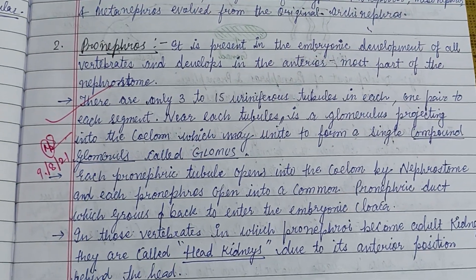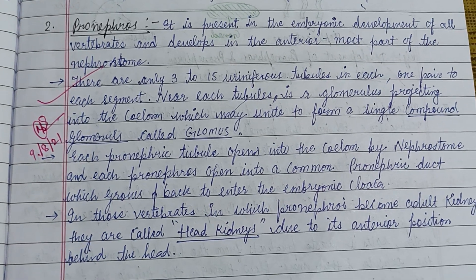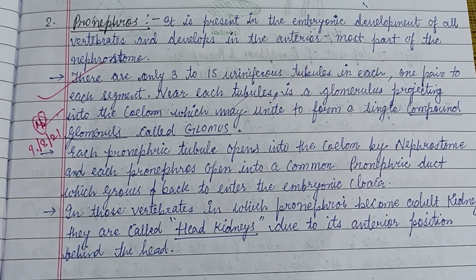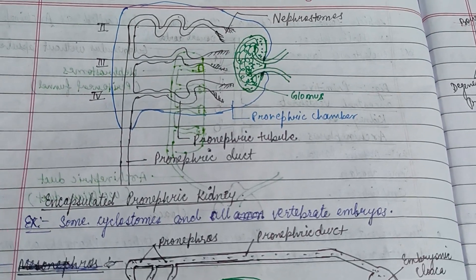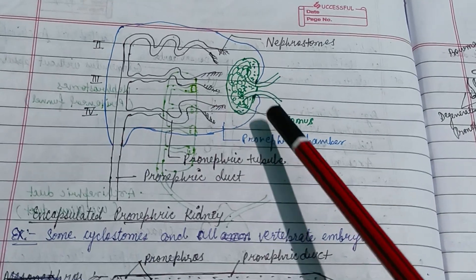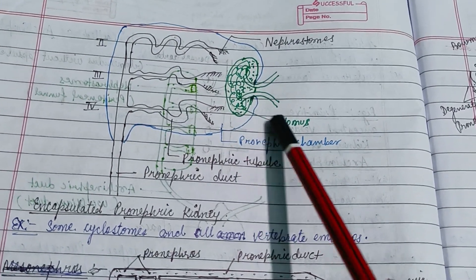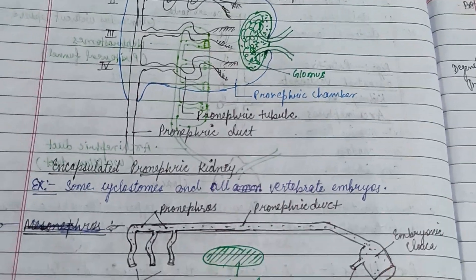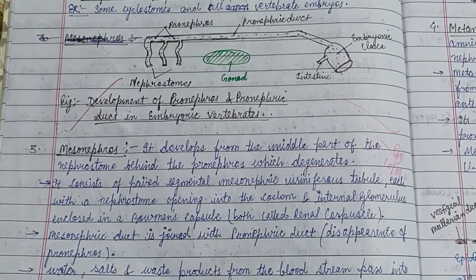Pronephros is present in the embryonic development of all vertebrates and develops in the anterior-most part of the nephrostome. It is the primitive type of kidney. The figure of the pronephric kidney shows the nephrostomes, the glomus — a primitive form — the pronephric chamber, pronephric tubules, and pronephric duct.